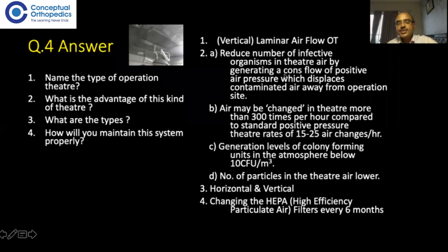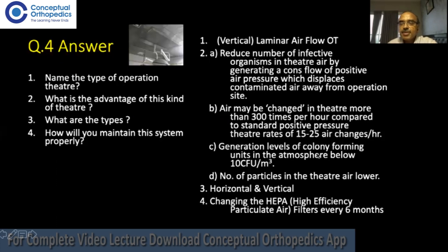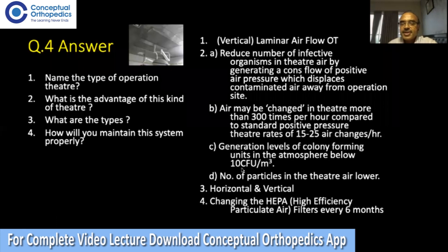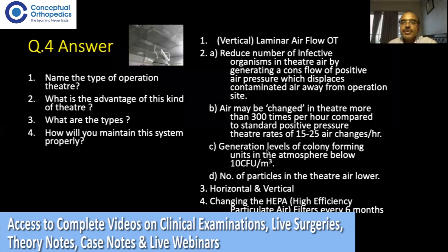The advantages of laminar airflow are: first, it reduces the number of infective organisms in theater air by generating a continuous flow of positive air pressure, which displaces contaminated air away from the operation site. Second, air is changed more than 300 times per hour, compared to standard positive pressure at 15–25 air changes per hour. Third, colony-forming units in the atmosphere are kept below 10 per cubic meter — corresponding to Class 10 laminar airflow classification. Fourth, the number of particles in the theater is lower.